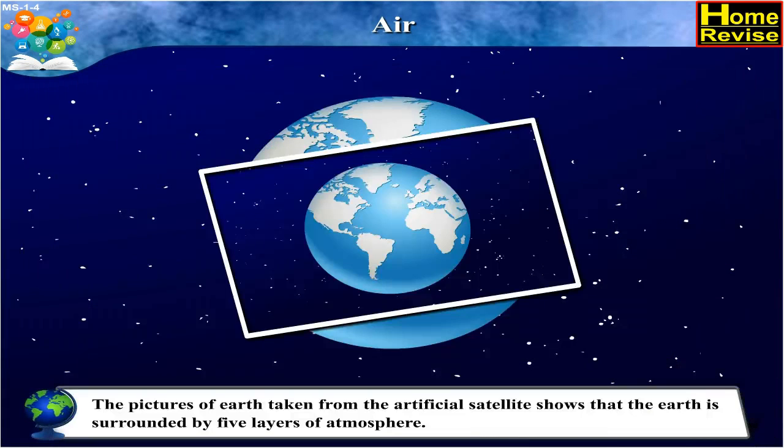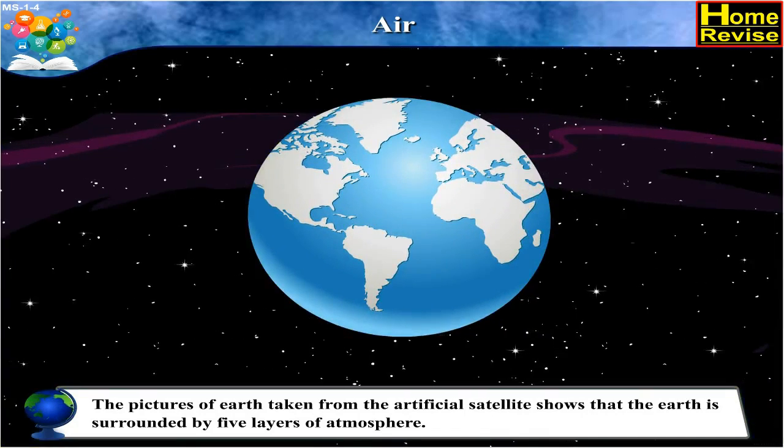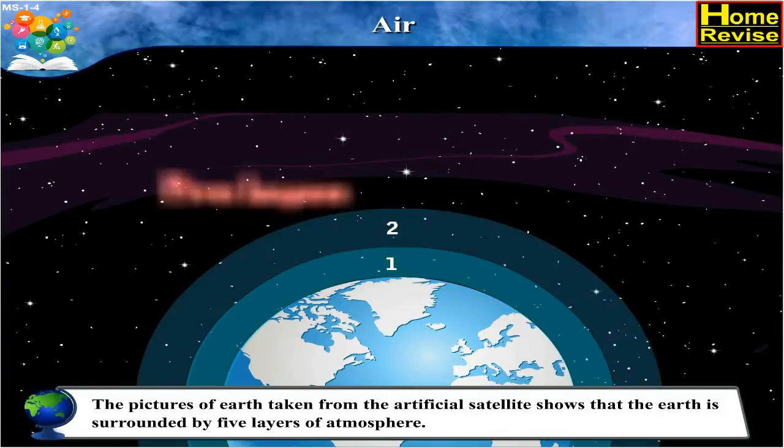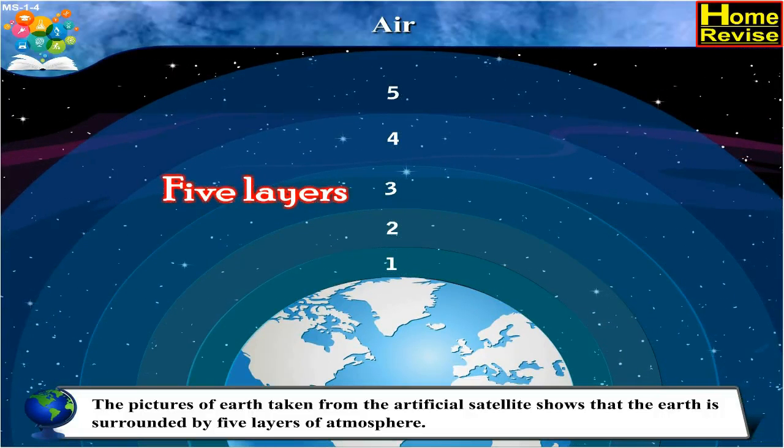Students, the pictures of Earth taken from the artificial satellite shows that the Earth is surrounded by five layers of atmosphere. Can you imagine that?